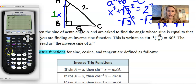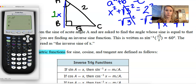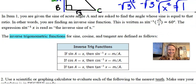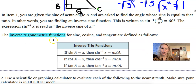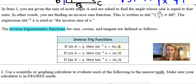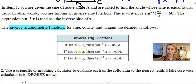On your calculator, above the sine button in blue — just like the inverse was above the squared button — you have sine⁻¹, cosine⁻¹, and tan⁻¹ in blue: inverse sine, inverse cosine, inverse tan. So sine⁻¹(x) is read as the inverse sine of x. Here's a table: if sine of A equals x, then inverse sine of x equals the measure of A; if cosine of A equals x, then inverse cosine of x equals angle A; if tangent of A equals x, then inverse tan of x gives you the measure of angle A. Basically, the inverse of a trig function gives you an angle.